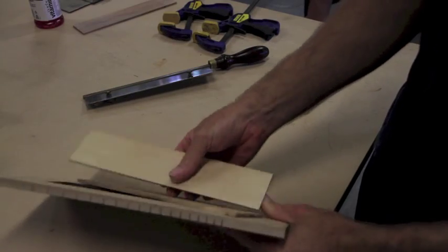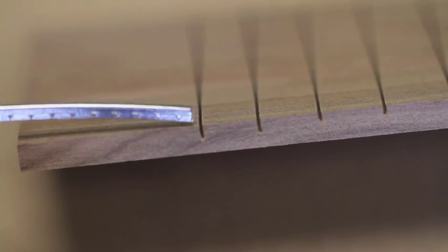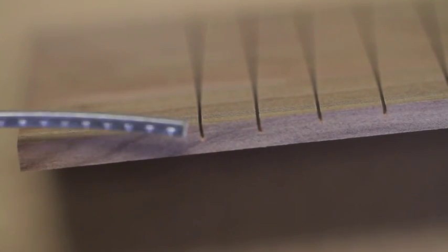Once you've done all the frets, you can take it out of the jig and check that all the cuts have gone to the right depth. If they haven't, you can finish it off without the use of the jig.